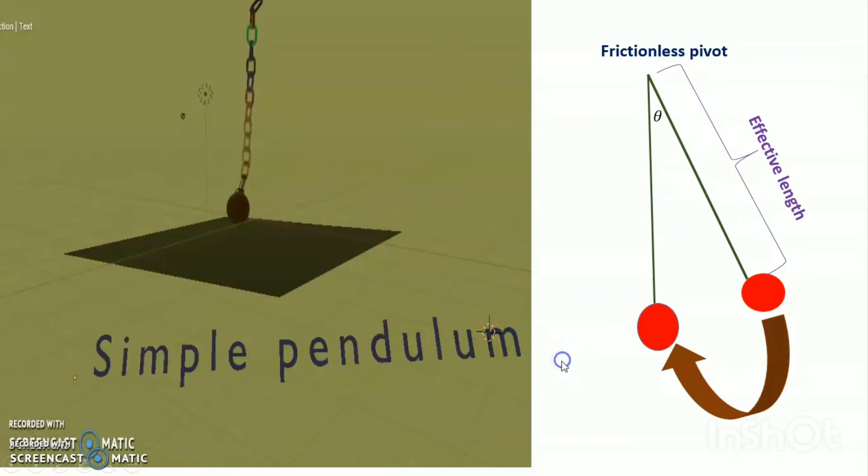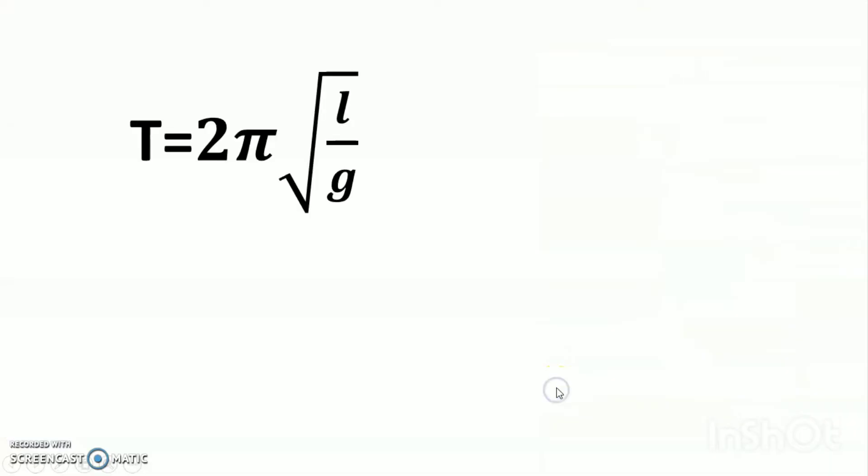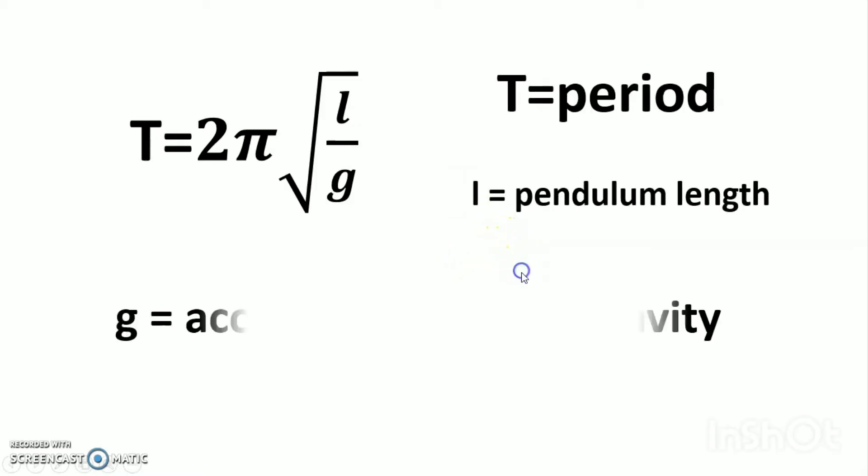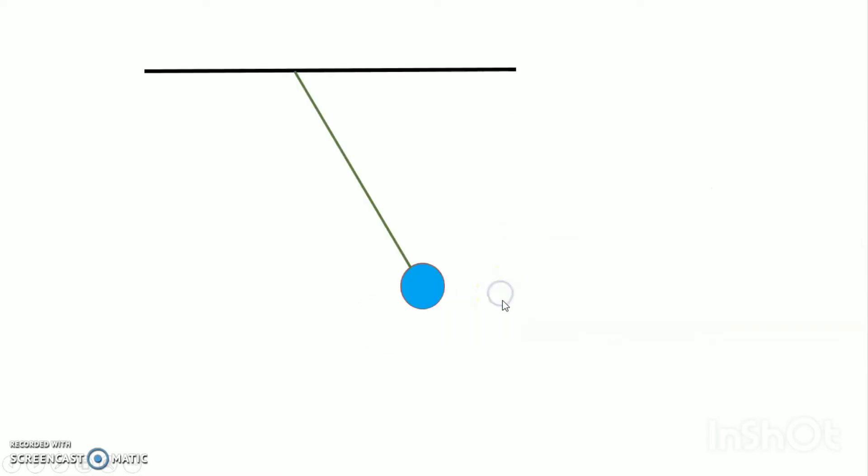Now, I will discuss the total work. I have already told that period of the pendulum is T = 2π√(l/g). T equals period, l equals pendulum length, and g equals acceleration due to gravity.